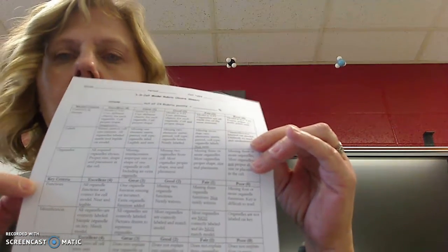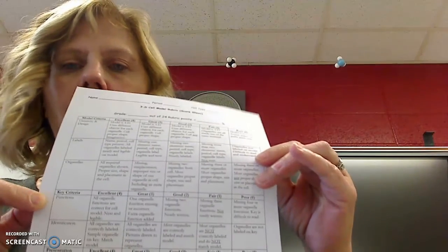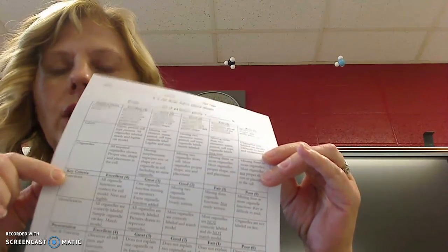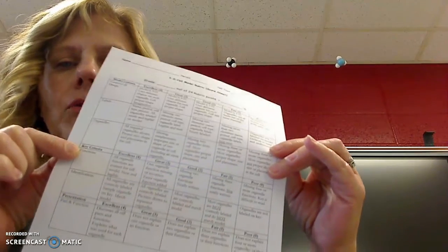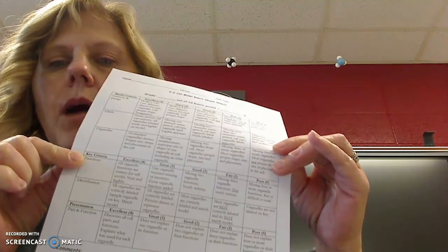The key should say mitochondria. I used a jelly bean, kidney bean or whatever you used. That's what the key is. So you're going to have a reference key that explains your model.